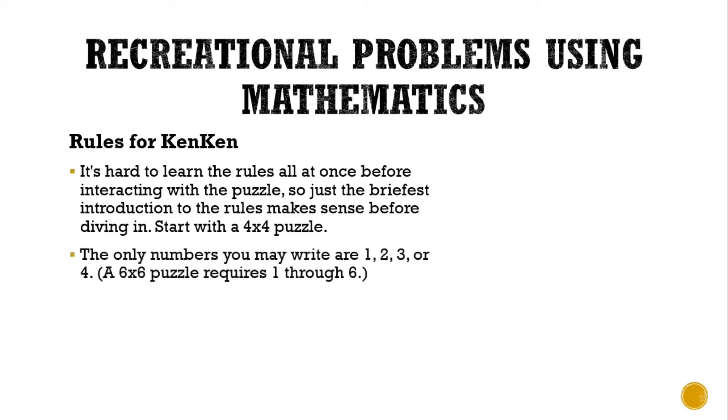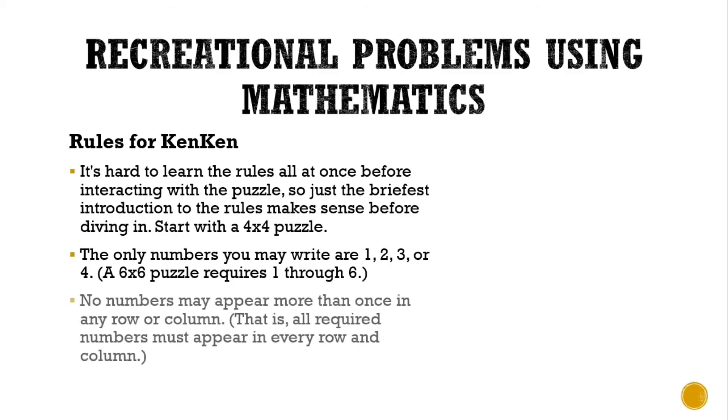The only numbers that you may write are 1, 2, 3, or 4 for a 4x4 puzzle. For a 6x6 puzzle, it requires 1 through 6. No number should appear more than once in any row or column. That is, all required numbers must appear in every row and column.